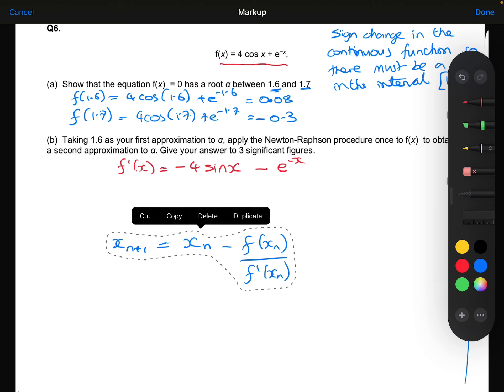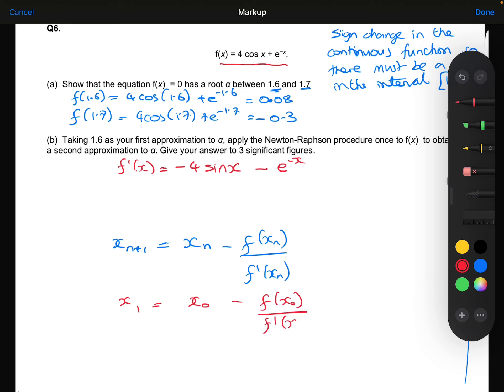Now let's use the formula to get the second approximation. x_1 equals x_0 minus f(x_0) over f'(x_0), which is 1.6 minus f(1.6) over f'(1.6).